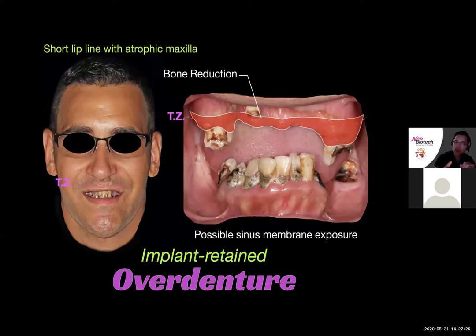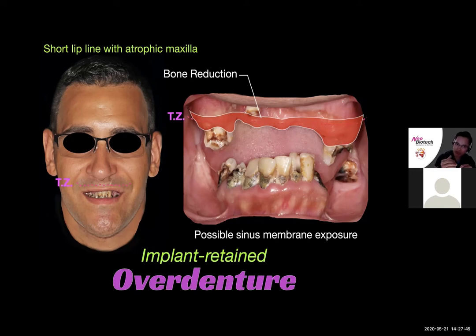For our partially edentulous patient, a removable overdenture is a more conservative approach — to get him through his 30s and 40s — and when he's in his 50s, we can consider All-on-X. The type of overdenture I'm talking about sits right on top of the ridge and palate and is retained by three to four implants. I don't want to confuse you, but there is another type called a fixed hybrid, where the denture sits on top of a custom titanium bar splinted on three to four implants. We don't want the fixed hybrid option here because it requires just as much restorative space as an All-on-X.